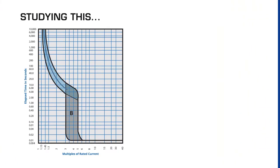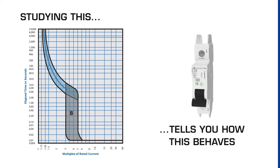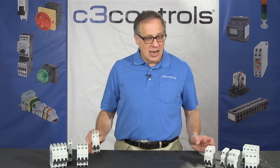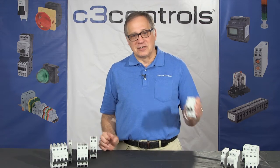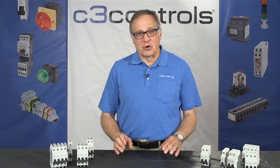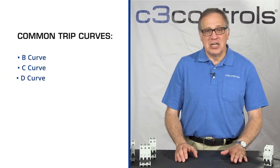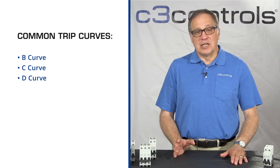Let's dive into the next question: what exactly is a trip curve? Simply put, studying this will tell you how a device behaves. Trip curves are graphs provided by the manufacturer which represent the expected behavior of a circuit protection device. There are many different forms these devices come in. For this video we're referring to UL 489 and UL 1077 devices. The most common trip curves are B curve, C curve, and D curve, all of which C3 carries.